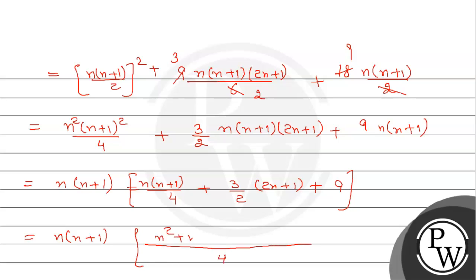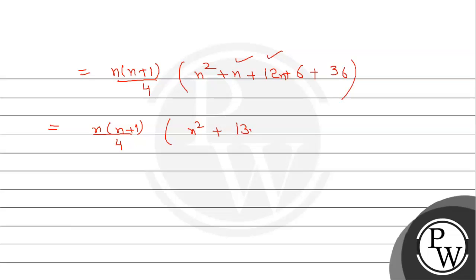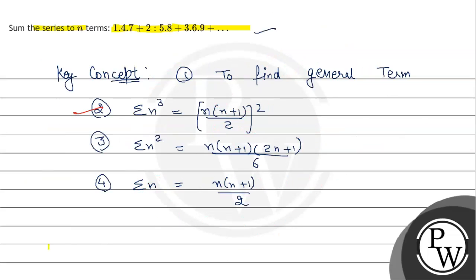With LCM 4: numerator becomes (n²+n) + 6(2n+1) + 36 = n²+n+12n+6+36 = n²+13n+42. So the final answer is n(n+1)/4 · (n²+13n+42).